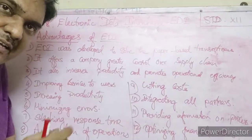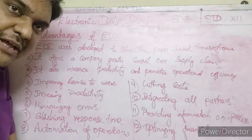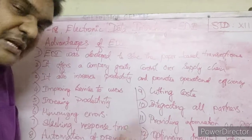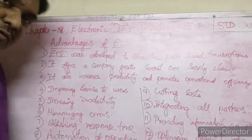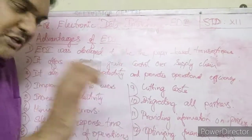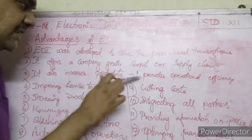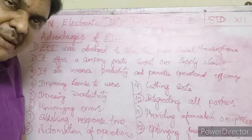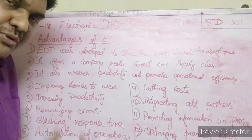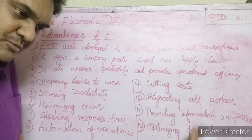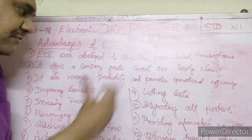Second advantage: EDI offers a company greater control over the supply chain. The supply chain — what is the shipment, what are the delays — can be fully controlled and it is fully automated. It also increases productivity and promotes operational efficiency, so the company is able to manage shipments more effectively.